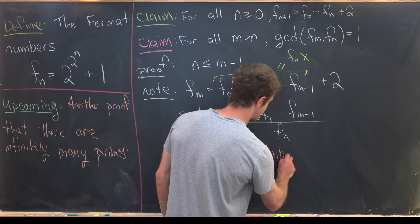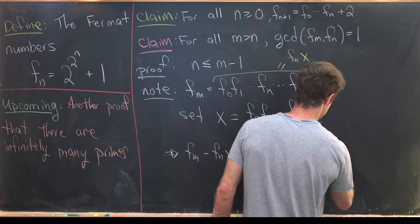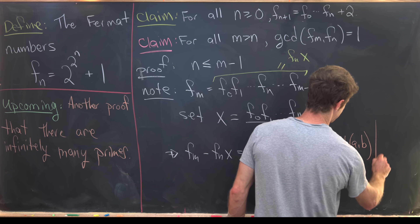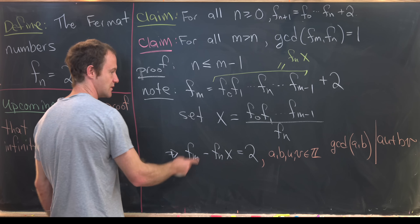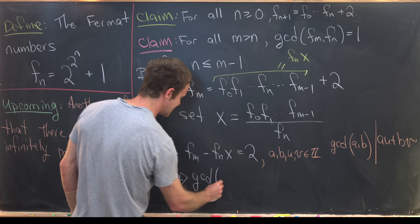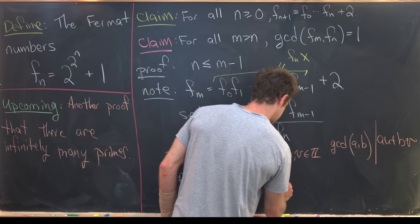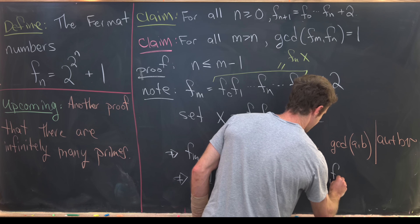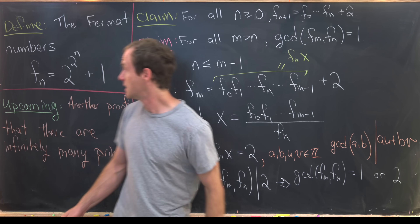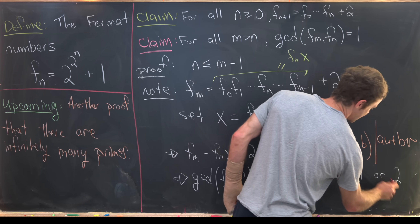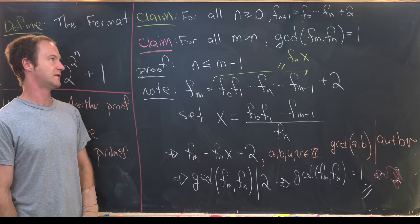Rewriting the equation gives F sub m minus F sub n times x equals 2. By the standard result that gcd(a, b) divides any linear combination a·u plus b·v, the gcd of F sub m and F sub n must divide 2. Since 2 is prime, the gcd equals 1 or 2. But all Fermat numbers are odd, so the gcd cannot be 2, leaving the gcd equal to 1.